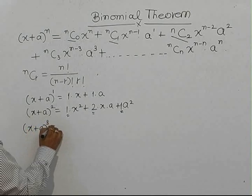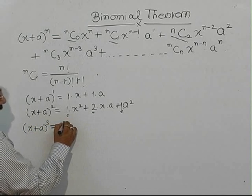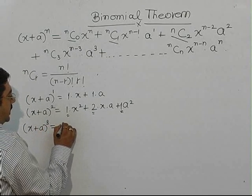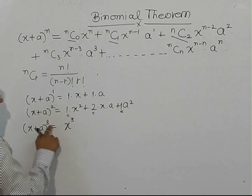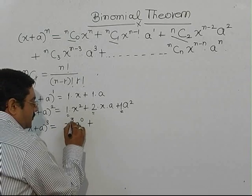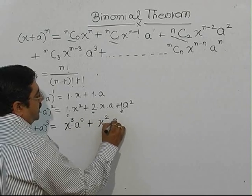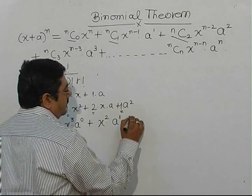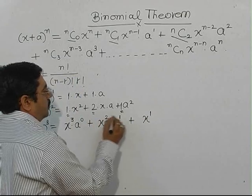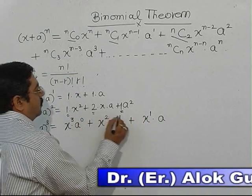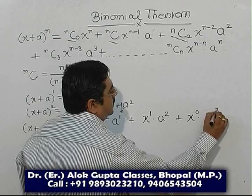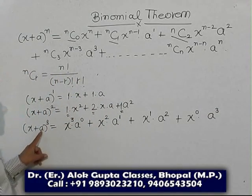For (x + a)^3, the method is: write the highest power of x, which is 3, with the lowest power of a, which is 0. Then decrease x's power by 1 to get x², and increase a's power by 1 to get a^1. Then decrease x's power again — x^1 — and increase a's power — a^2. Finally x^0 and a^3.